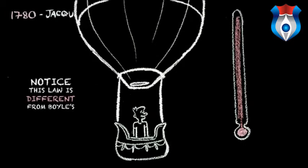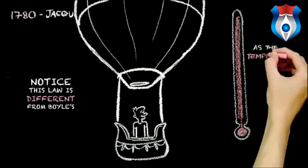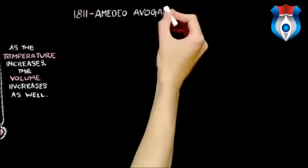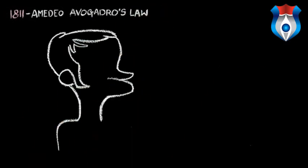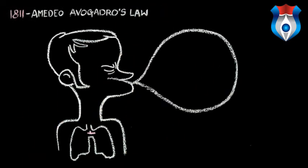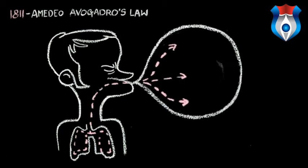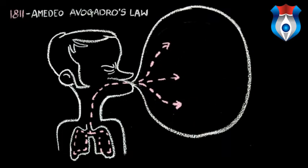Notice this law is different from Boyle's — Charles' law is a direct relationship. As the temperature increases, the volume increases as well. The third law is also easily demonstrated. When you're blowing up party balloons, the volume increases. As you are blowing, you're forcing more and more gas particles into the balloon from your lungs. This causes the balloon volume to increase. This is Avogadro's law in action.